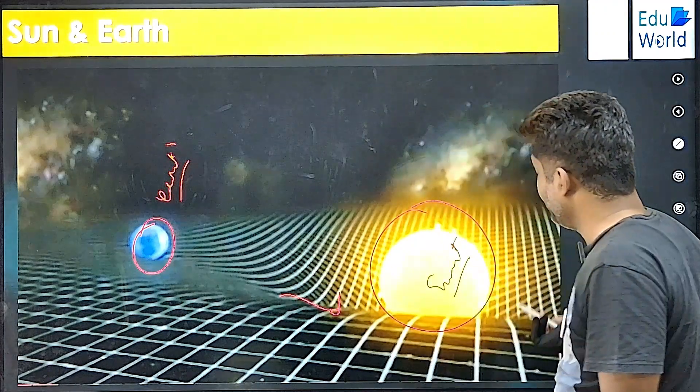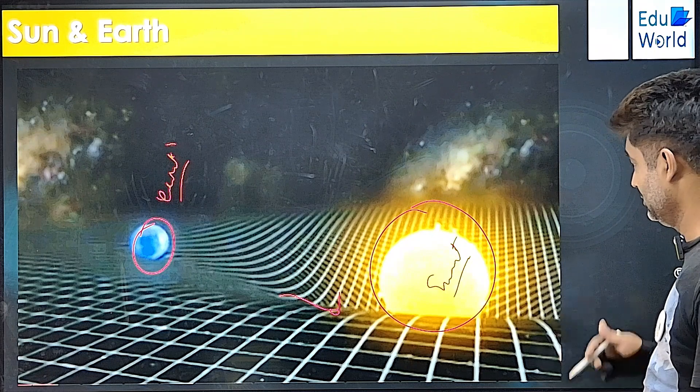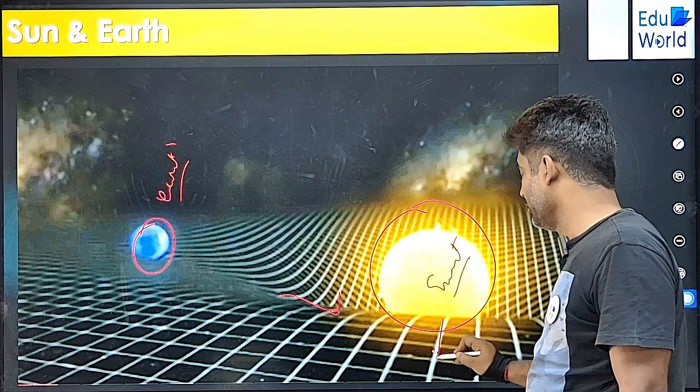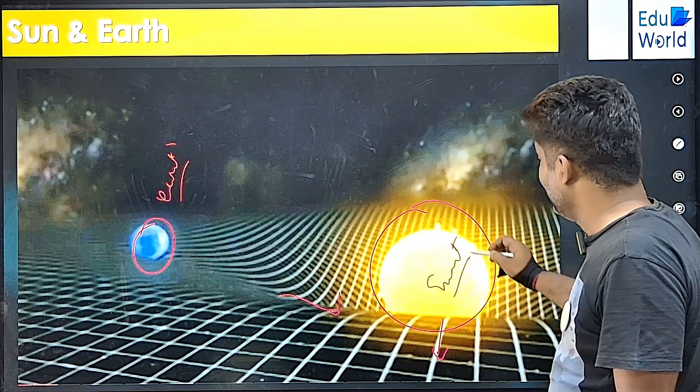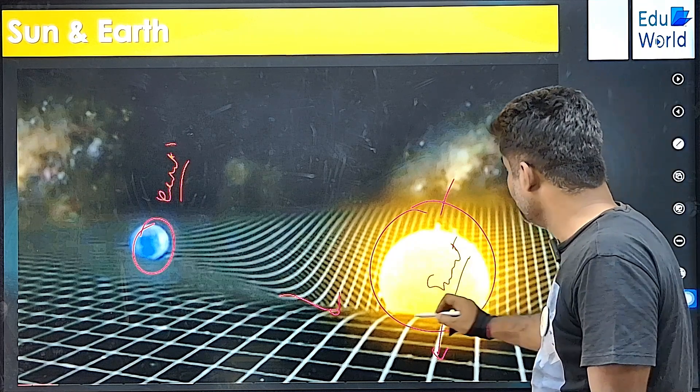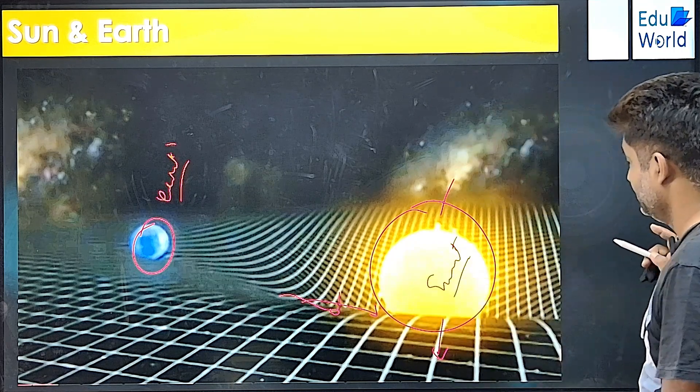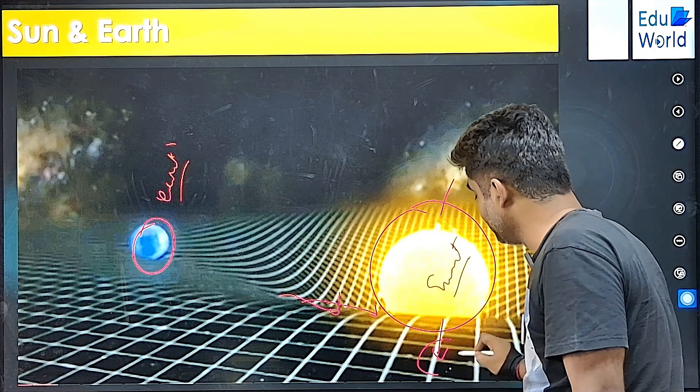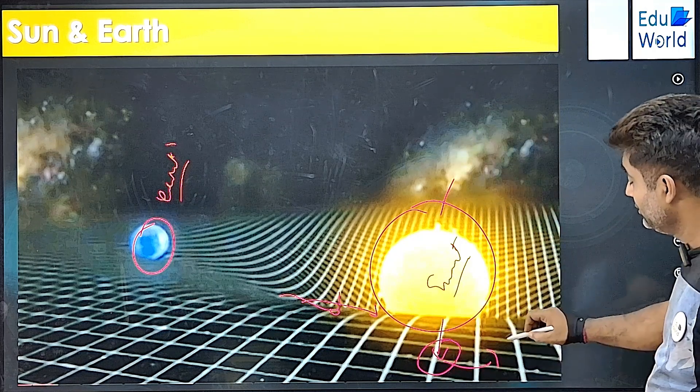But the question is, if in space there is no downward gravity, then even the mass of the Sun is weightless in this space. So it will not form any surface, unless this force exists. So now the question is, what is this force?